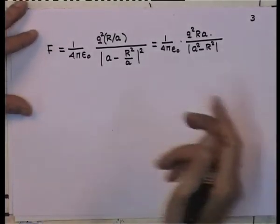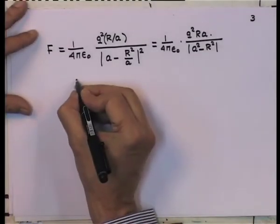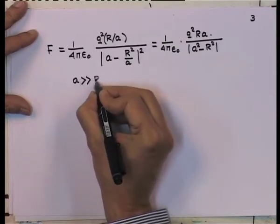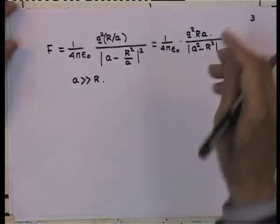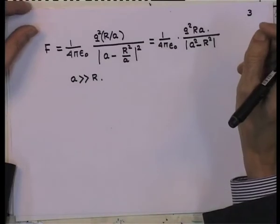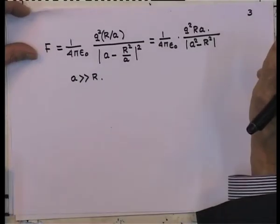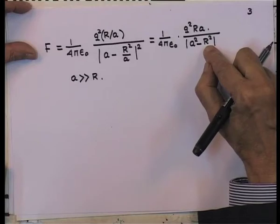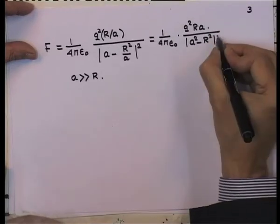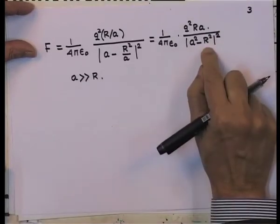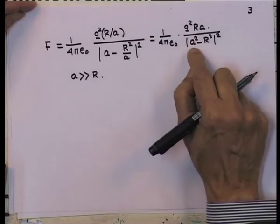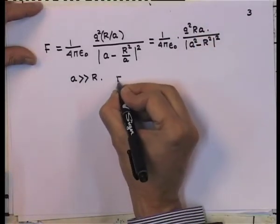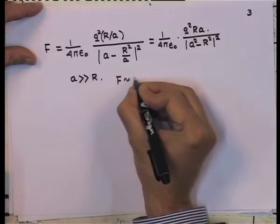If a is much greater than R — the charge is far away — then a² dominates and we can neglect R², so the force goes as 1/a³.